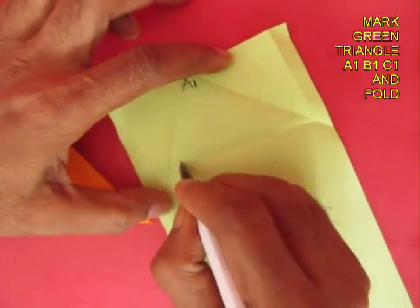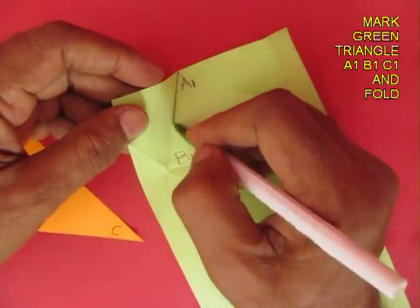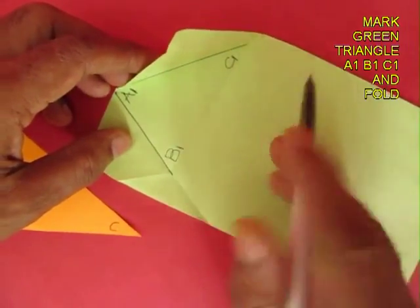Now you will get a green triangle and mark it as A1, B1, and C1.